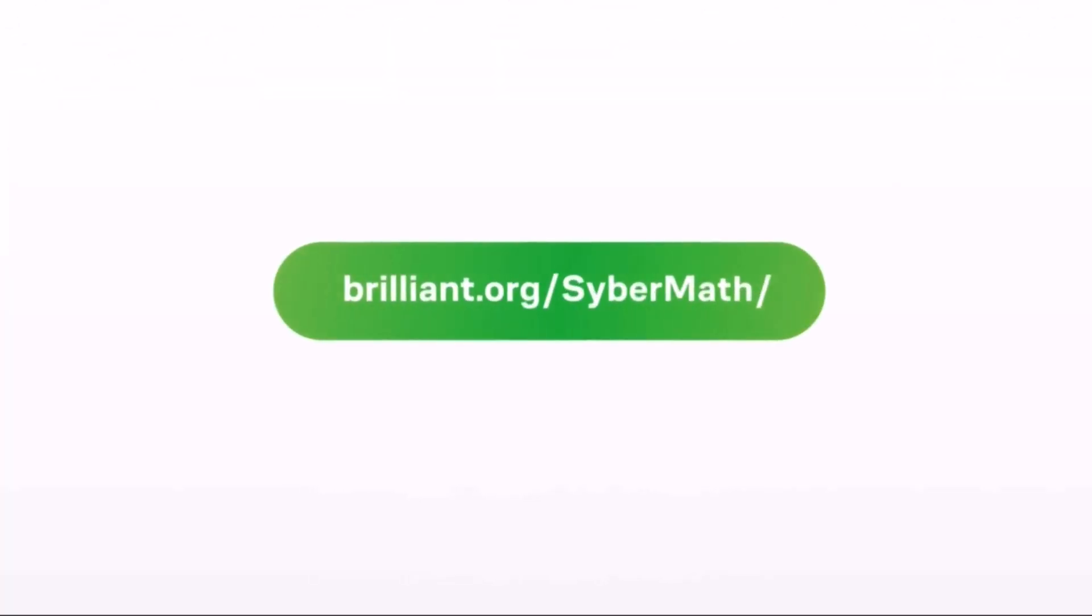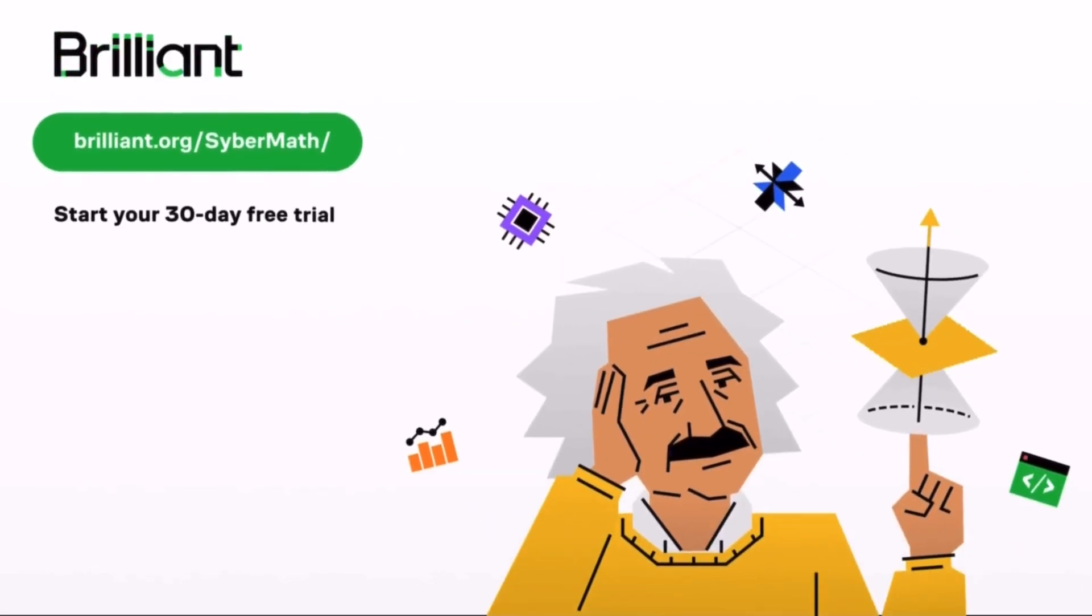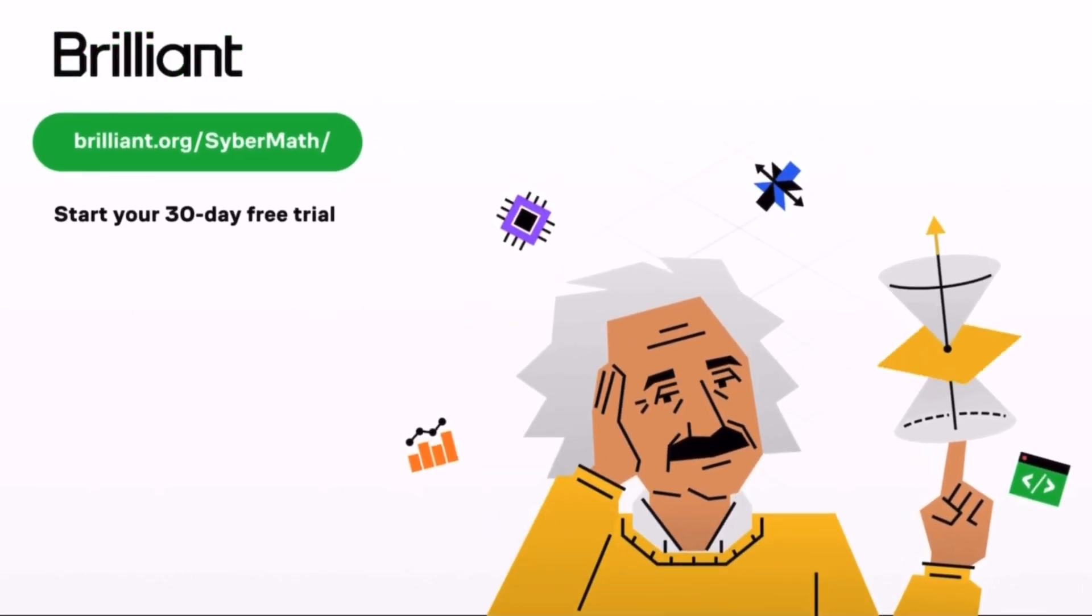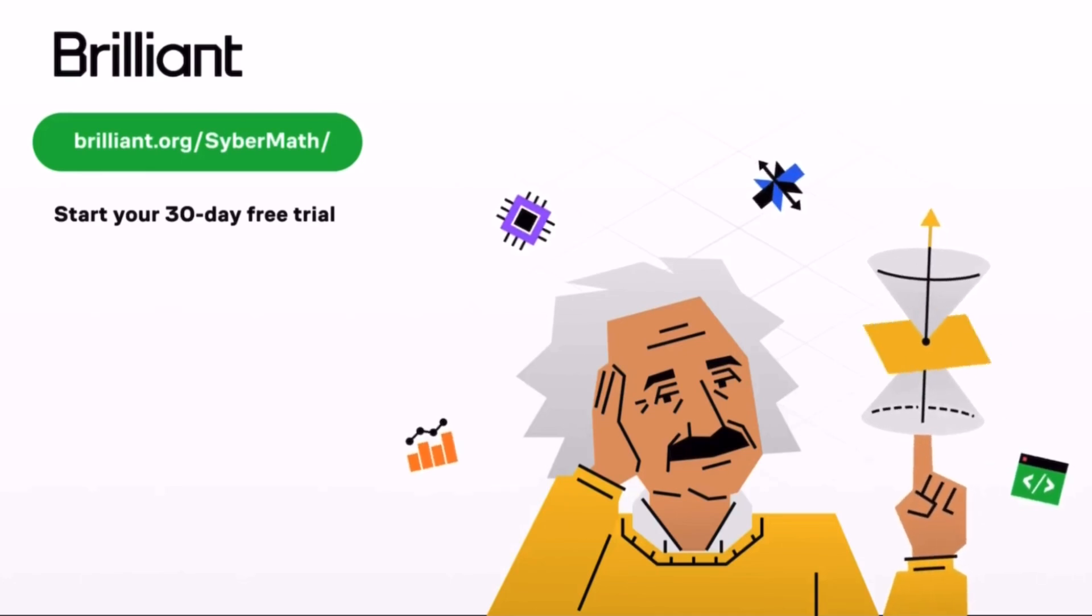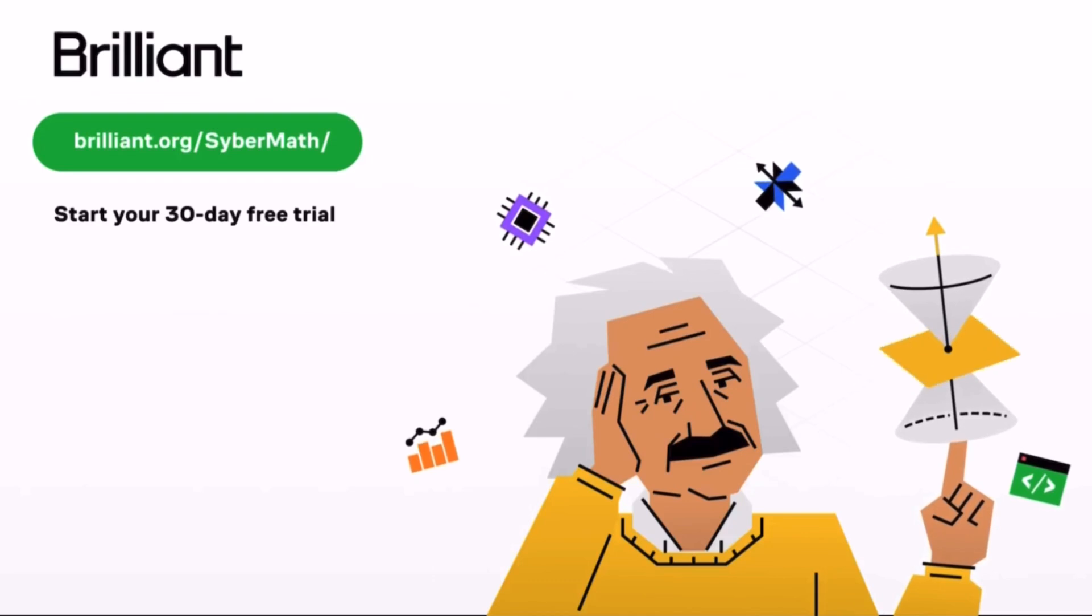To try everything Brilliant has to offer for free for a full 30 days, visit brilliant.org slash cybermath or click on the link in the description. You'll also get 20% off an annual premium subscription. So don't forget to check it out.